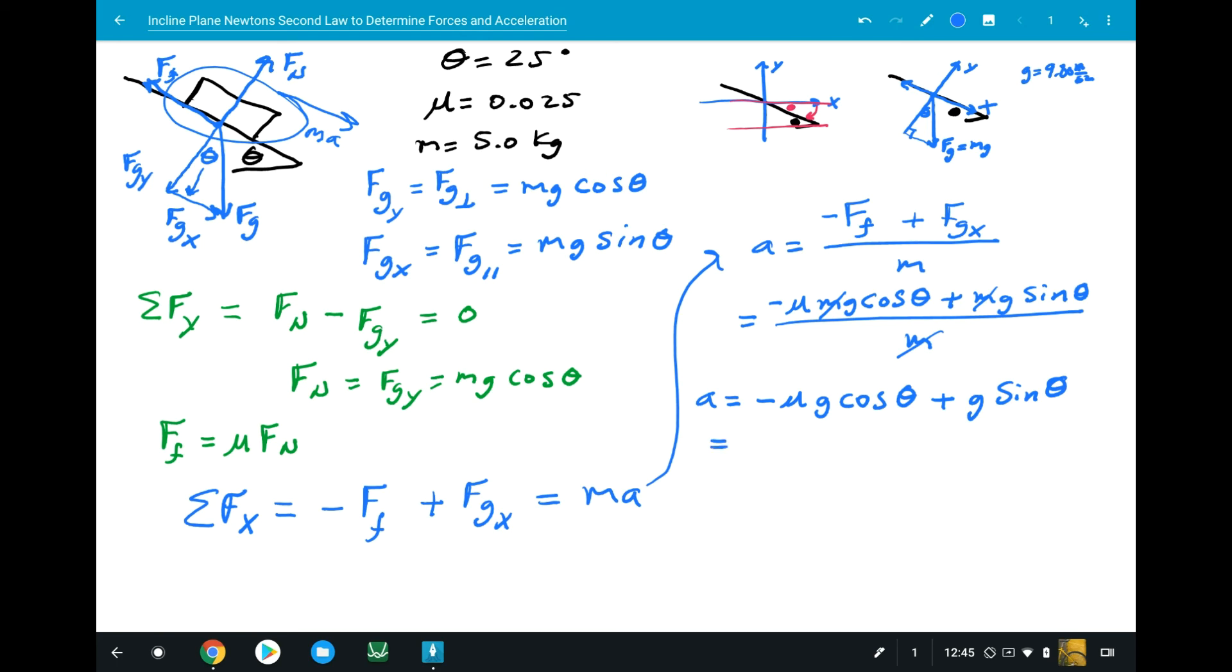Let's solve for this. I'm going to factor out the 9.8, so 9.8 meters per second squared, that's G, times 0.025, that was the coefficient of friction, cosine 25 degrees plus sine 25 degrees. That's going to equal 3.9 meters per second squared. The box is going to be accelerating at 3.9 meters per second squared.